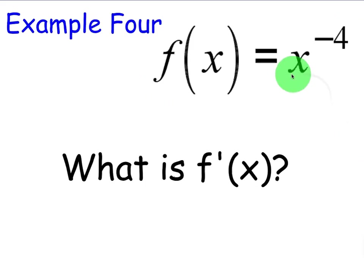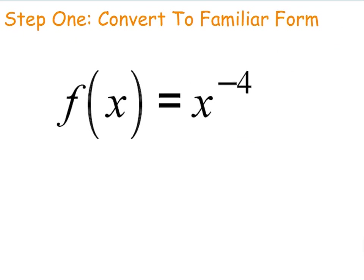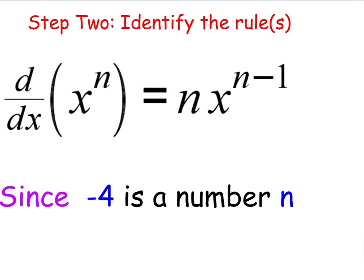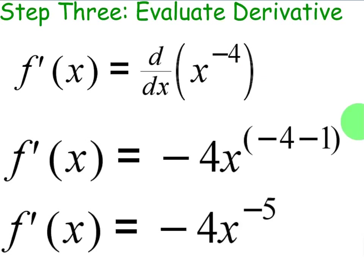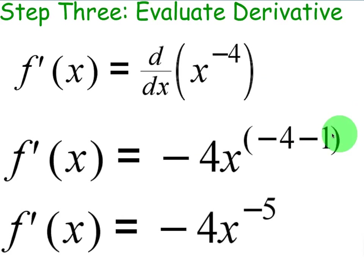Example 4: f(x) = x to the negative 4. What is f′(x)? The exponent is a number, the base is a variable, so we can use the power rule. It's already in familiar form. We take the derivative d/dx of x to the negative 4 — take the exponent negative 4, make it the coefficient, subtract 1 from the exponent. Notice negative 4 minus 1 is negative 5, not negative 3. So be careful. The final answer is negative 4x to the negative 5.